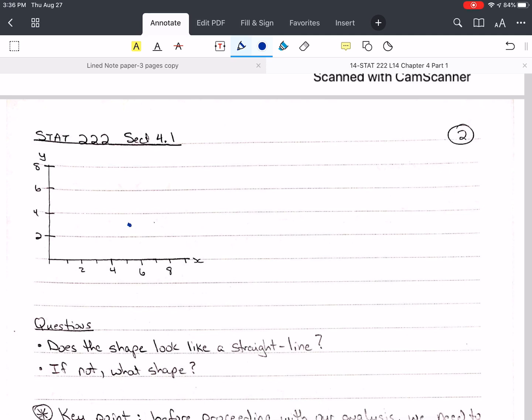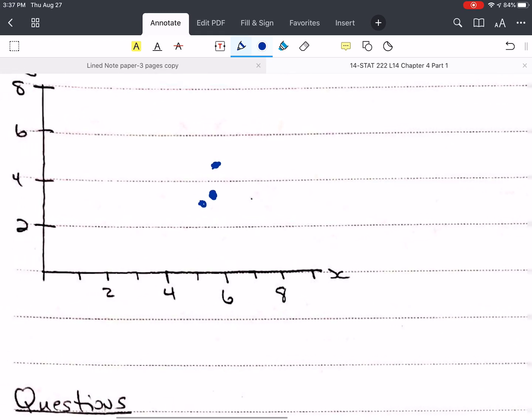The next value is 5.5 and 3.6. I'm going to say that's about there. Then I have 5.9 and 4.5, about there. Maybe I should zoom in so that this is easier for me to plot. Then I have 6.1 and 4.0, so that's about there.